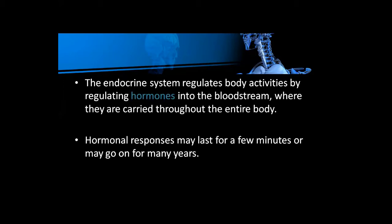The purpose of the endocrine system is to regulate body activities such as fear, anger, and happiness, by regulating hormones. Hormones are carried throughout the entire body via the bloodstream, and by the help of hormones, the endocrine system performs its function all around the body.